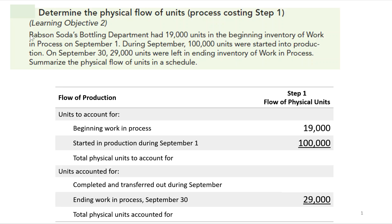The first problem says Babson's Soda Bobbling Department had 19,000 units in beginning inventory work in process on September 1st. During September, 100,000 units were started into production. On September 30th, 29,000 units were left in ending inventory work in process. We summarize the physical flow with a schedule showing beginning WIP of 19,000 and started into production of 100,000.